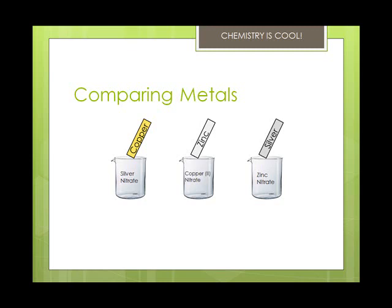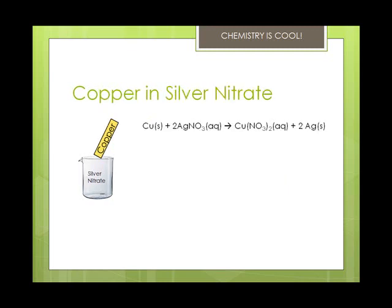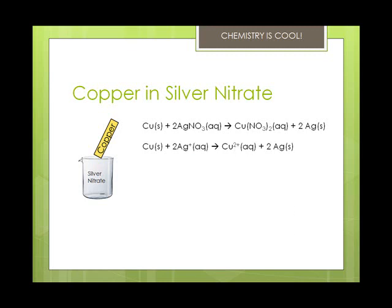Consider the three solutions shown here. Each solution contains metal cations and a strip of elemental metal. If the metal atoms on the strip transfer electrons to the metal cations in solution, a reaction will occur. In the first beaker, the copper atoms transfer electrons to the silver ions. Copper atoms are oxidized, and the silver cations are reduced.